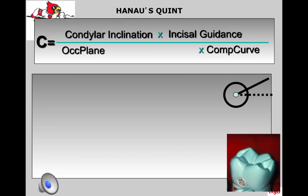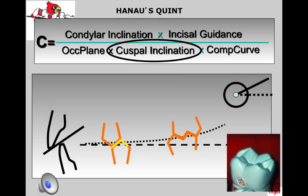Another factor that influences the occlusion is cuspal inclination. The inclines of those cusps will affect the way teeth slide over one another in conjunction with the other factors of Thielmann's formula. A cusp is the cone or chevron-shaped protuberance on the crown of a tooth that forms the occlusal surface. The cusp angle or inclination is the angle made by the average slope of the cusp with the cusp plane, measured mesial-distally and buccal-lingually.